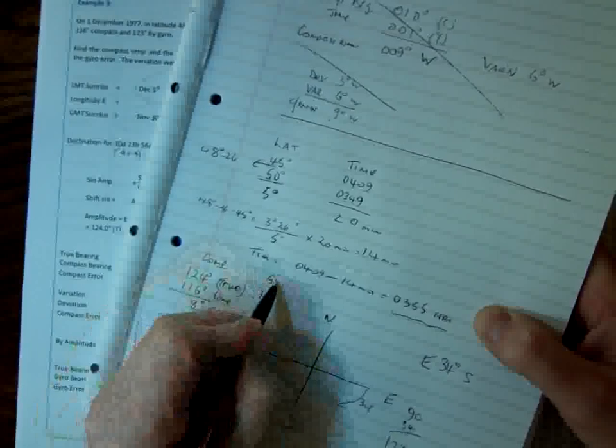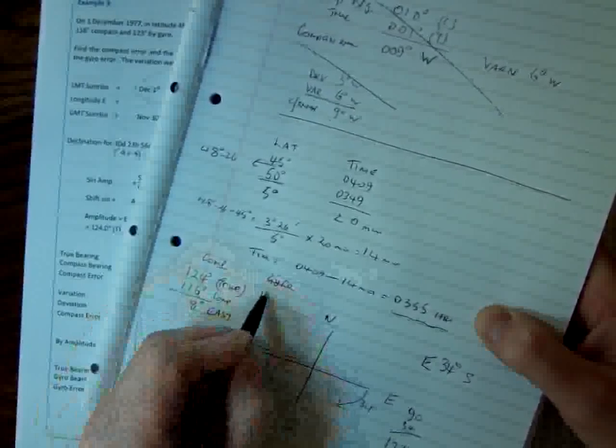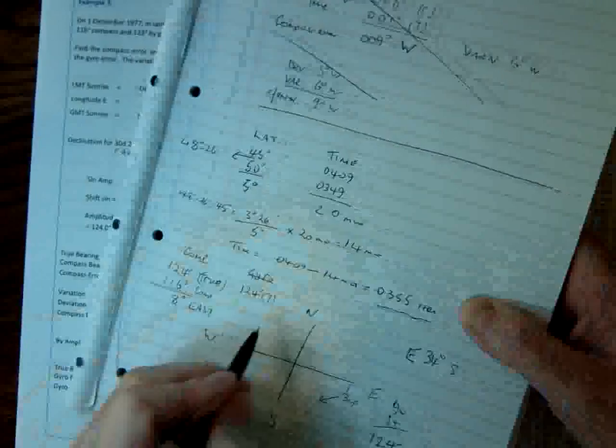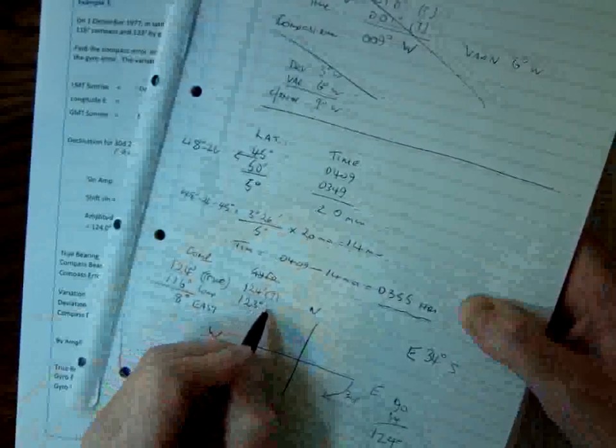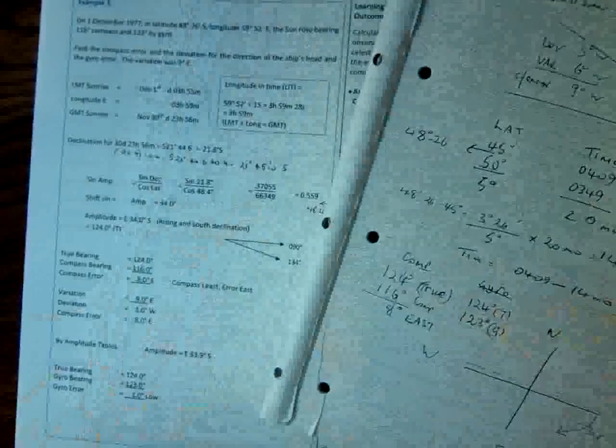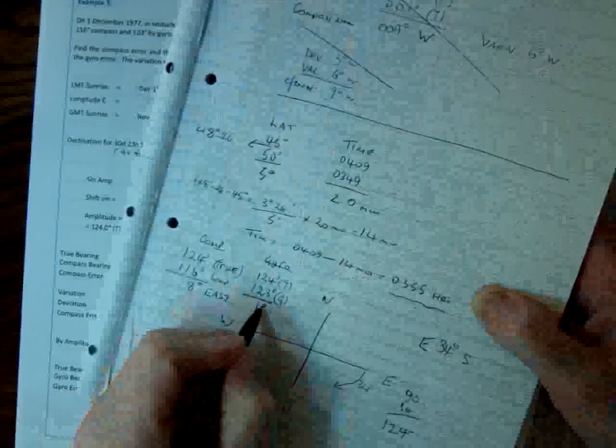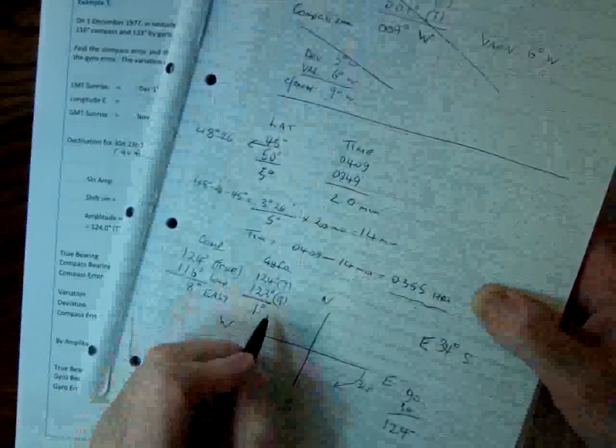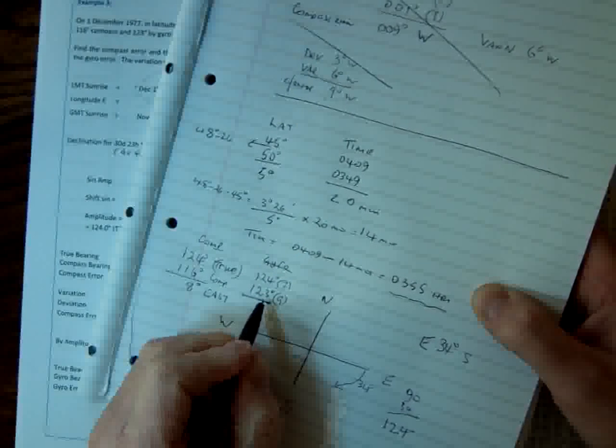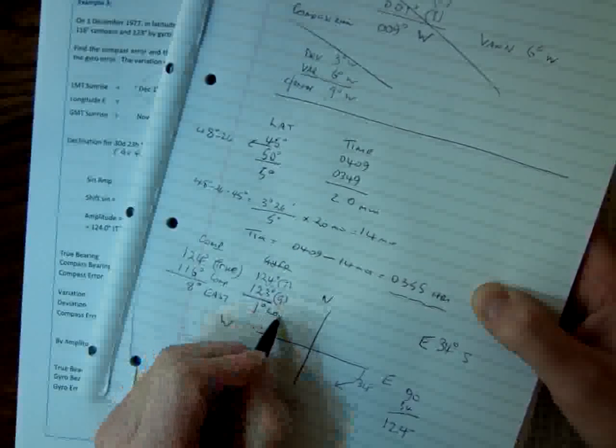So 124 degrees true, and we're told the gyro was 123 degrees, 123 degrees gyro. So if it's 124 degrees, then there's only 1 degree difference, and we can see that the gyro is actually reading low. Because on the ship, you've got 123, and it's actually 124, so your error is low.